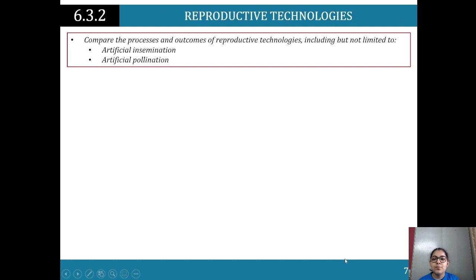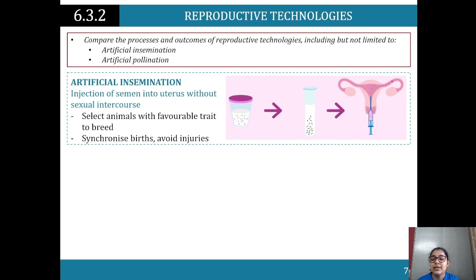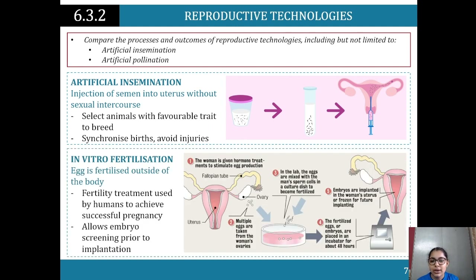Comparing the processes and outcomes of reproductive technologies including artificial insemination and artificial pollination: artificial insemination is the injection of semen into the uterus without sexual intercourse, used to select animals with favorable traits to breed, synchronize births, and avoid injuries. In vitro fertilization involves an egg being fertilized outside the body for fertility treatments to achieve successful human pregnancies, and allows embryo screening prior to implantation.